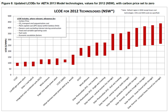It includes the initial capital, discount rate, as well as the costs of continuous operation, fuel, and maintenance. This type of calculation assists policymakers, researchers and others to guide discussions and decision-making.